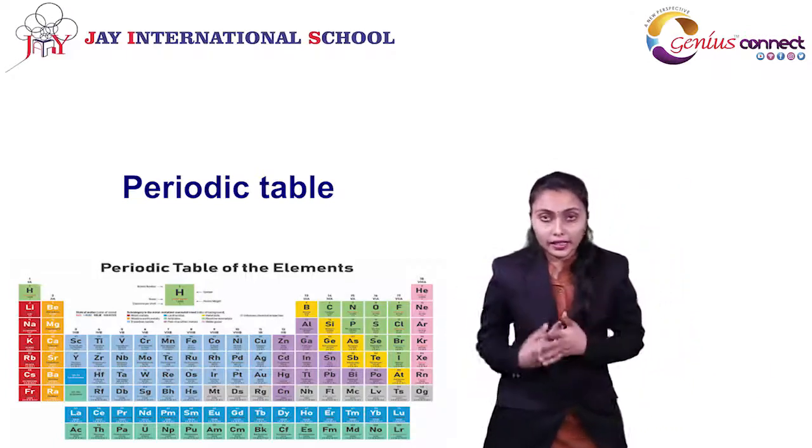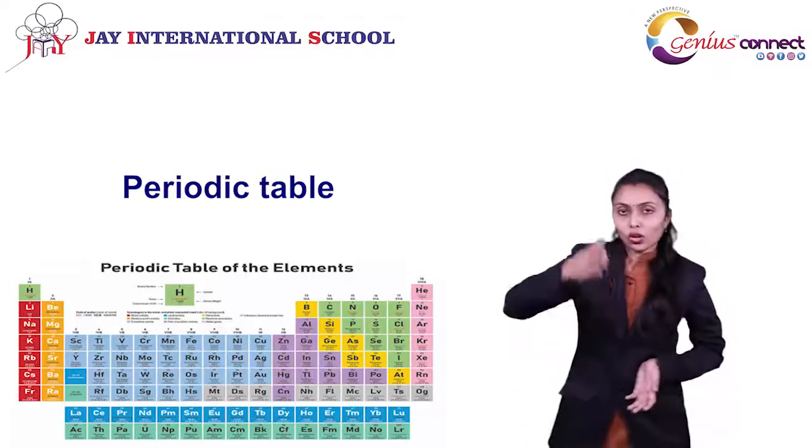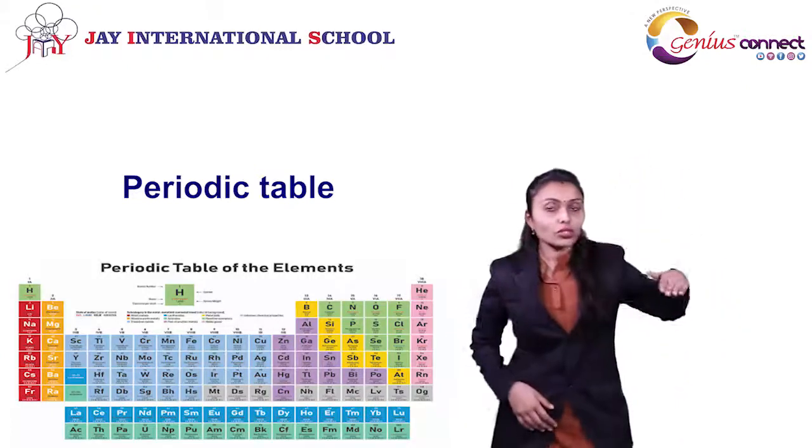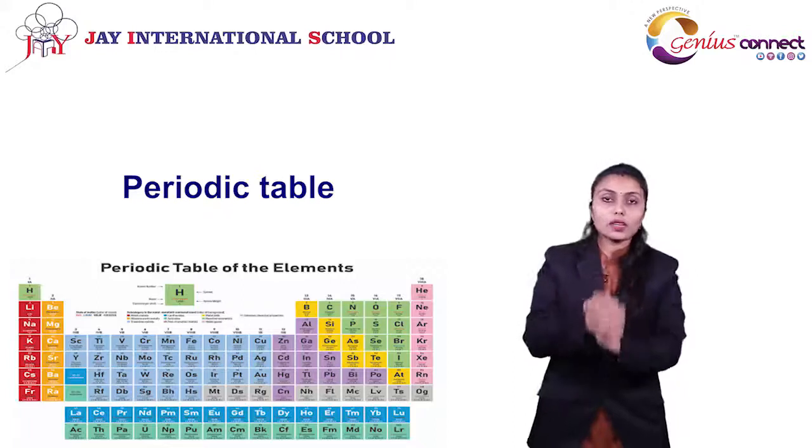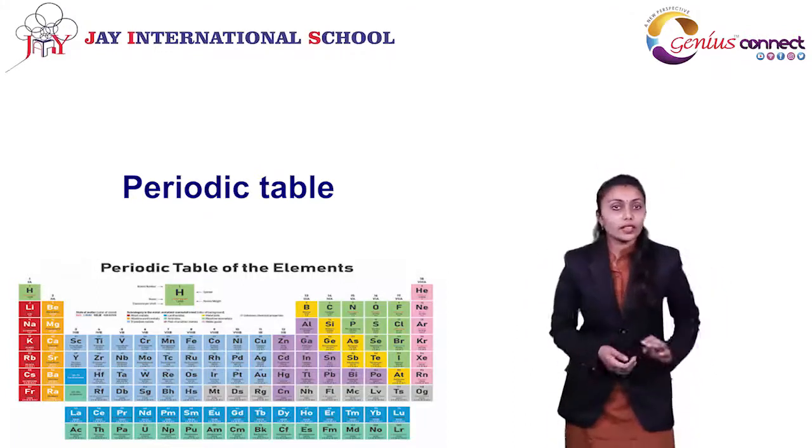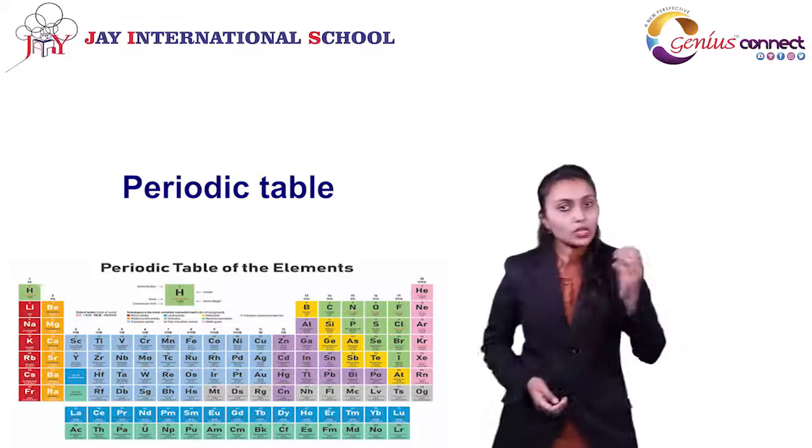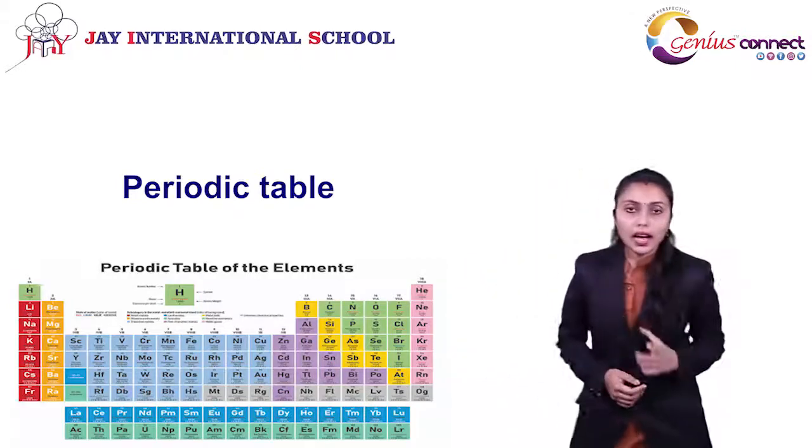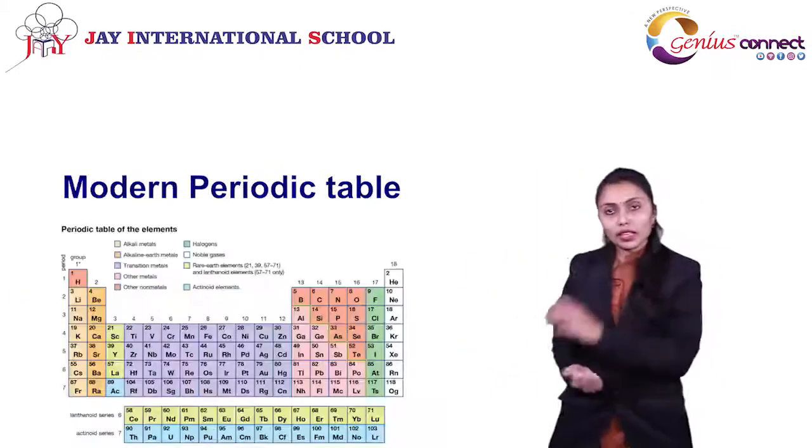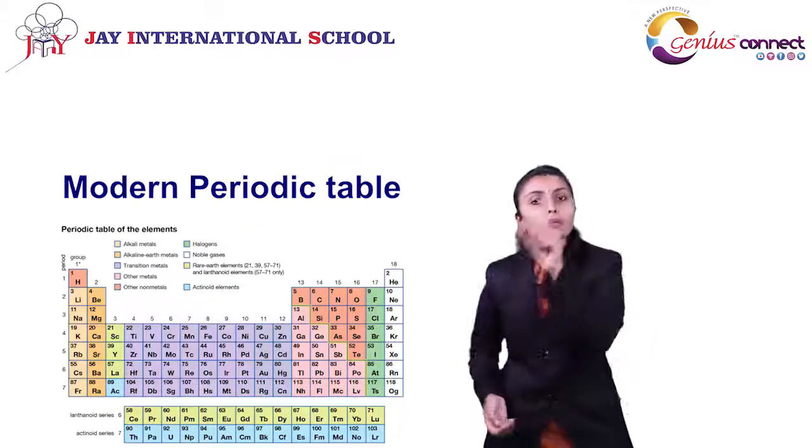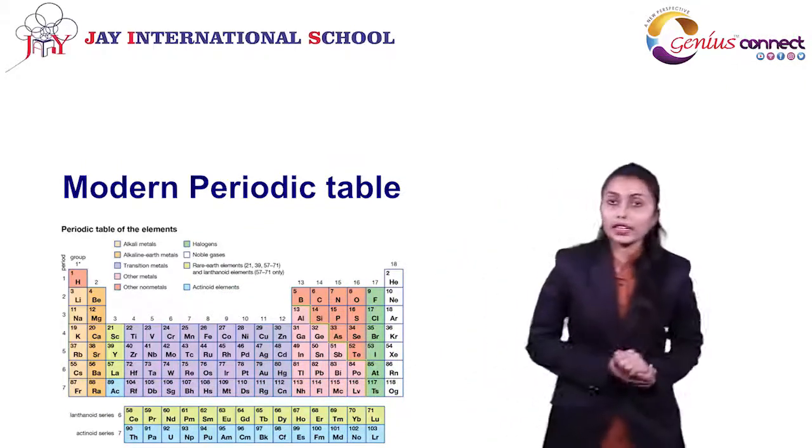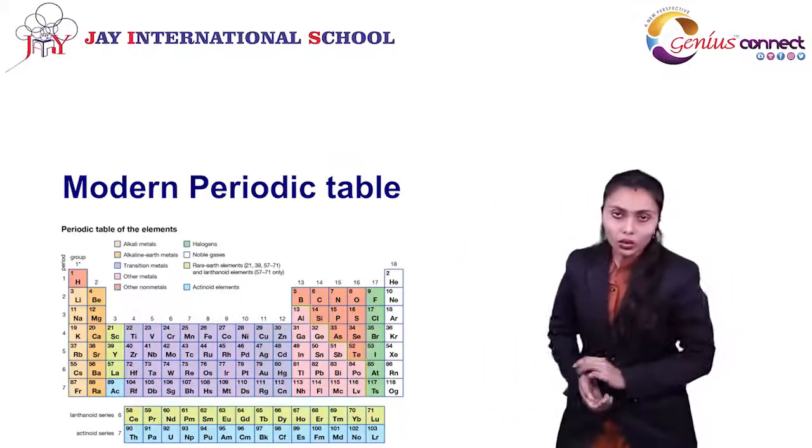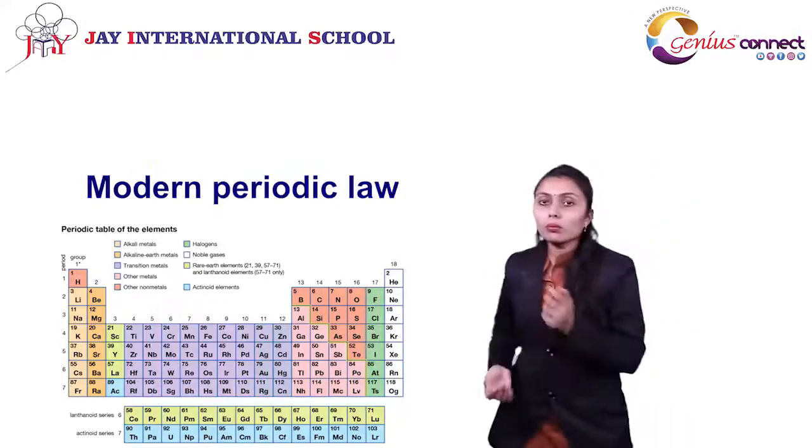How are the elements arranged? Whether they are arranged in columns or in rows? There are many inventions based on the periodic table, but the last periodic table that was accepted was the modern periodic table, and it is based on one law. What is that law? Modern periodic law.